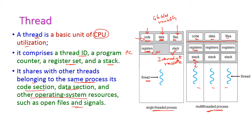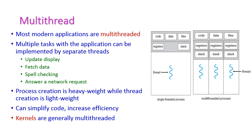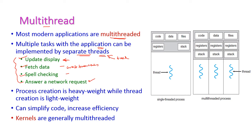Multi-threading means multiple tasks within an application can be implemented by separate threads — for each thread a separate task will be assigned. Most modern applications support multi-threading. In a multi-threaded application, separate threads handle tasks like updating the display, fetching data, spell checking, and answering network requests. For example, in a web browser, all these tasks execute separately, each assigned to a separate thread.